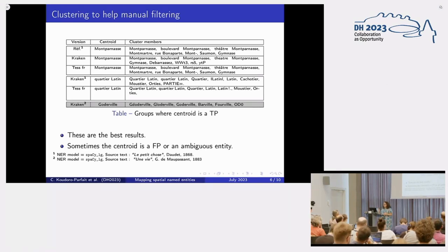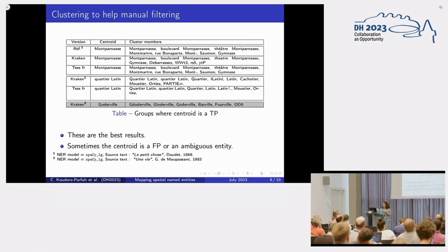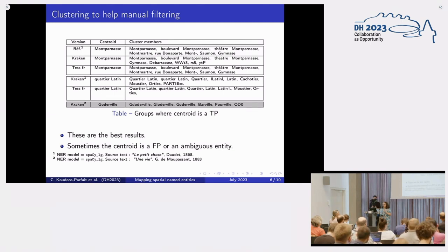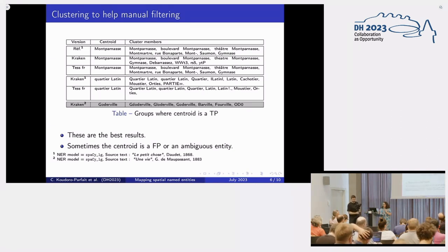This slide explains the clustering. The example shown is our best case: in the reference, we find 'Montparnasse' and group it with 'Boulevard Montparnasse' and 'Théâtre Montparnasse'. We get the same cluster for both Kraken and Tesseract. Sometimes the centroid is not a true named entity but the cluster still contains a valid entity, and sometimes we have an ambiguous named entity. We still have a lot of work to improve this step.